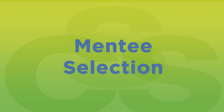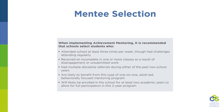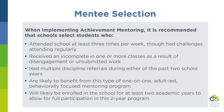Now we'll move to considerations for selecting mentees to participate in achievement mentoring. It is recommended that schools select students who have attended school at least three times per week but may have had challenges attending regularly; have received an incomplete in one or more classes as a result of disengagement or unsubmitted work; have had multiple discipline referrals during either of the past two school years; are likely to benefit from this type of one-on-one, adult-led, behaviorally focused mentoring program; and will likely be enrolled in your school for at least the next two academic years, to allow for full participation in this two-year program.